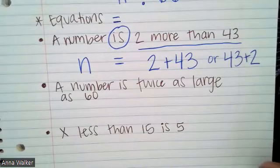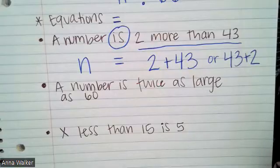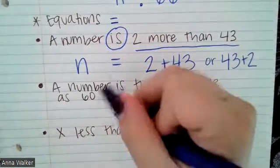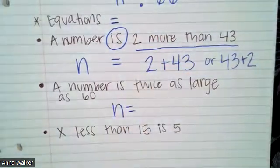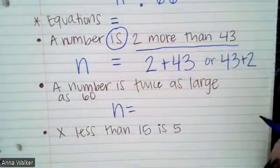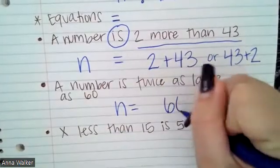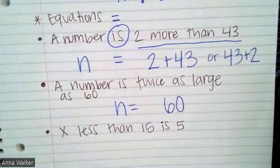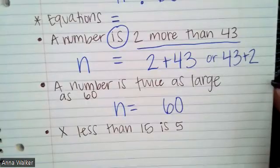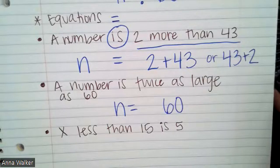Let's look at the second example. A number is twice as large as 60. So here we go again. A number is, that is going to be N equals, right? We said is, is equivalent to equals is twice as large as 60. So if I have the number 60, if I want to represent with math, something twice as large, that just means I need to duplicate it, right? Or double it.